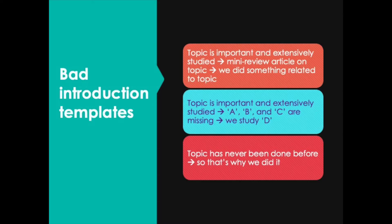The second bad template would be: the topic is important and extensively studied, A, B, and C are missing, but we're going to study D. Pointing out all of the missing knowledge in a field is not something you want to do in your introduction, because it's confusing to readers — they don't know which of those knowledge gaps you're going to be addressing. So you should only point out knowledge gap D if you're going to study knowledge gap D.